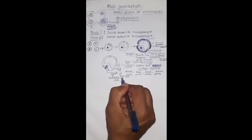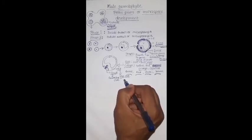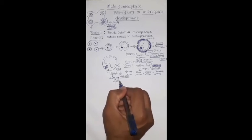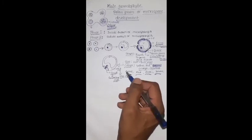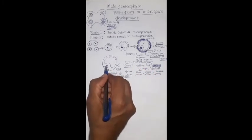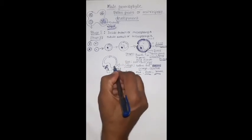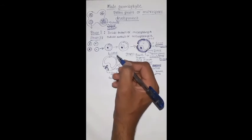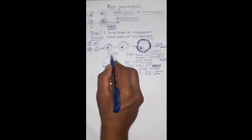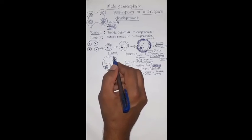The vegetative cell will be useful to the growth of the pollen tube in the future. The generative cell is useful for gamete formation or sperm production. Now we have two cells within one pollen grain — this is called the two-celled stage. Usually in angiosperms, the pollen grains are released in the two-celled stage only; this is a common phenomenon.